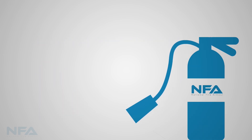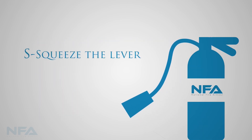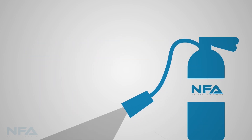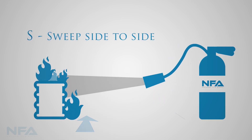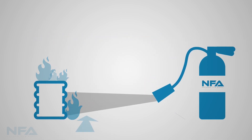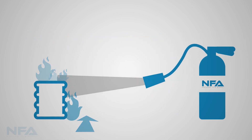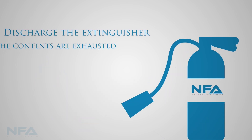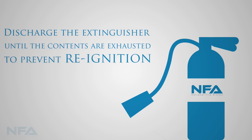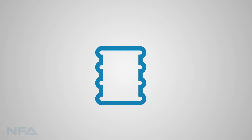Once the nozzle is aimed at the base of the fire, squeeze the levers together to release the fire extinguishing agent. Sweep the nozzle from side to side at least five to six inches beyond the right and left edges of the fire. Discharge the extinguisher until the contents are exhausted to prevent re-ignition. Move around the area and ensure that the fire is completely put out.